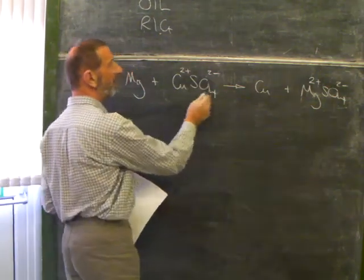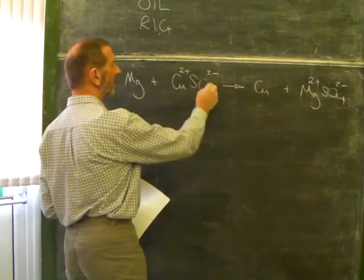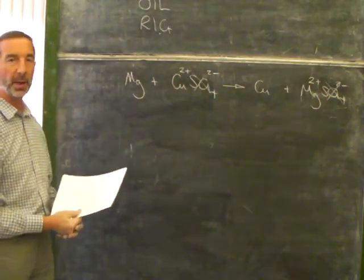Copper sulfate is an ionic compound. It contains copper ions and sulfate ions. What's happened is that we ended up with magnesium ions and sulfate ions. One thing's obvious. The sulfate has done nothing. The sulfate has simply found a different partner, effectively.